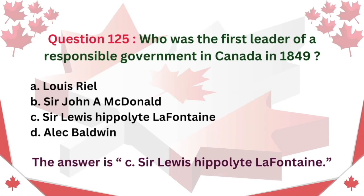Question 125: Who was the first leader of a responsible government in Canada in 1849? A. Louis Riel. B. Sir John A. MacDonald. C. Sir Louis Hippolyte LaFontaine. D. Alec Baldwin. The answer is C. Sir Louis Hippolyte LaFontaine.